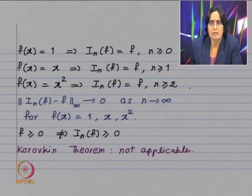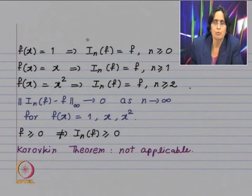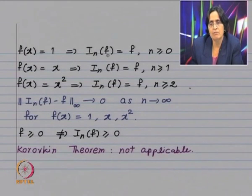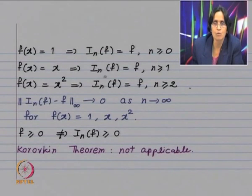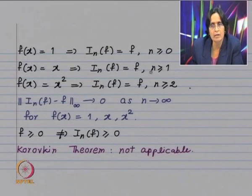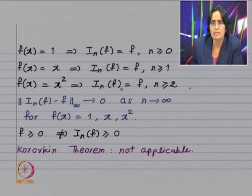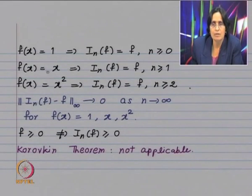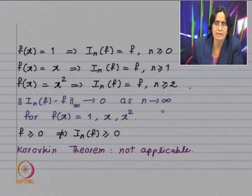Now look at the three functions: f(x) = 1, f(x) = x, and f(x) = x². Interpolating polynomials reproduce polynomials, so when f(x) = 1, the interpolating polynomial equals f for n ≥ 0. For f(x) = x, Iₙ(f) = f for n ≥ 1, and for f(x) = x², Iₙ(f) = f for n ≥ 2. Hence for these three functions, the infinity norm of Iₙ(f) − f tends to 0 as n tends to infinity.